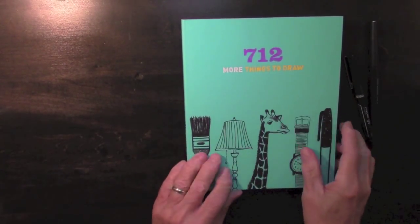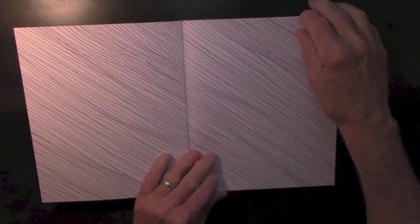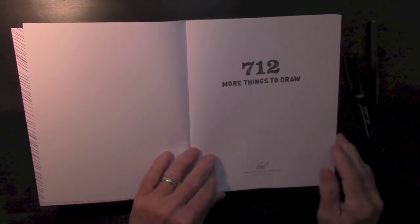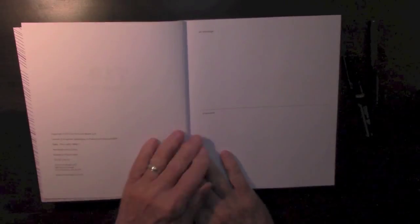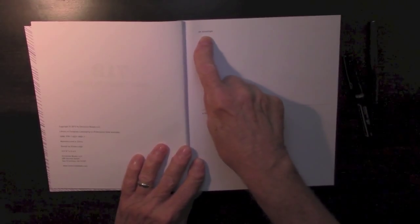712 More Things to Draw. All right. I did not draw this. This was already on here. And let's see what else we have. Okay, here's the first page. Now, I'm not sure if you can read that. It's very small writing, but it says an envelope.